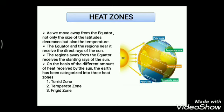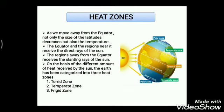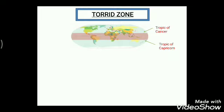On the basis of the different amounts of heat received from the sun, the earth has been categorized into three heat zones. In some areas the sunlight is more direct and in others it comes in slanting ways, so the whole earth has been divided into three heat zones, also called climatic zones. These three zones are: the torrid zone in the middle, the temperate zone, and the frigid zone.